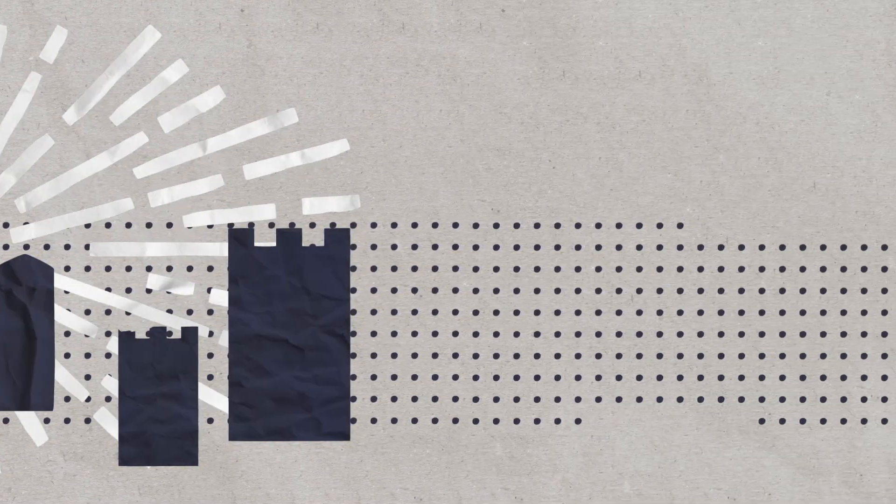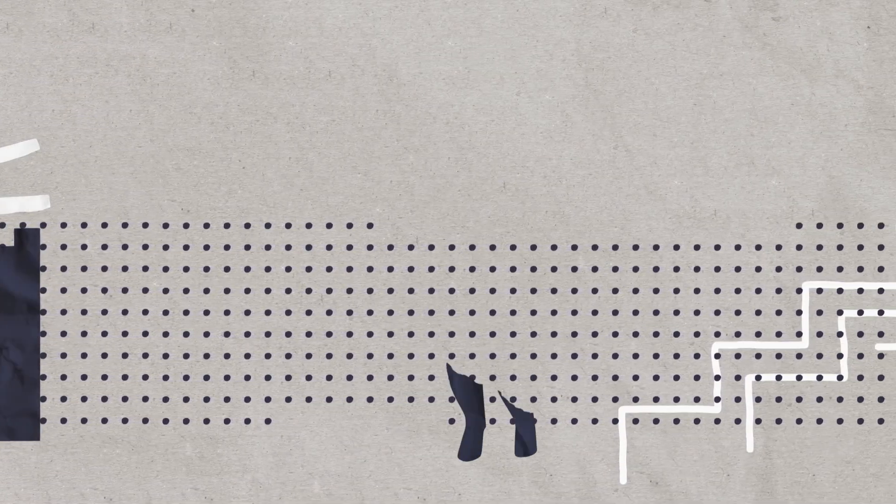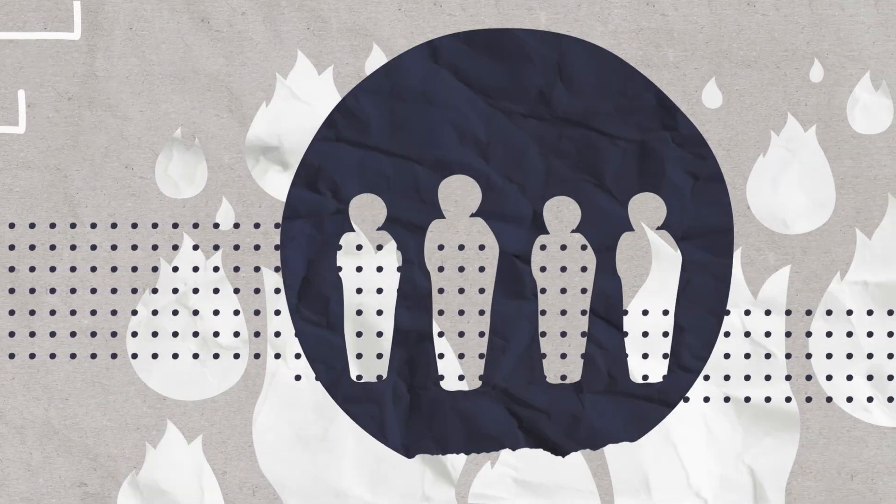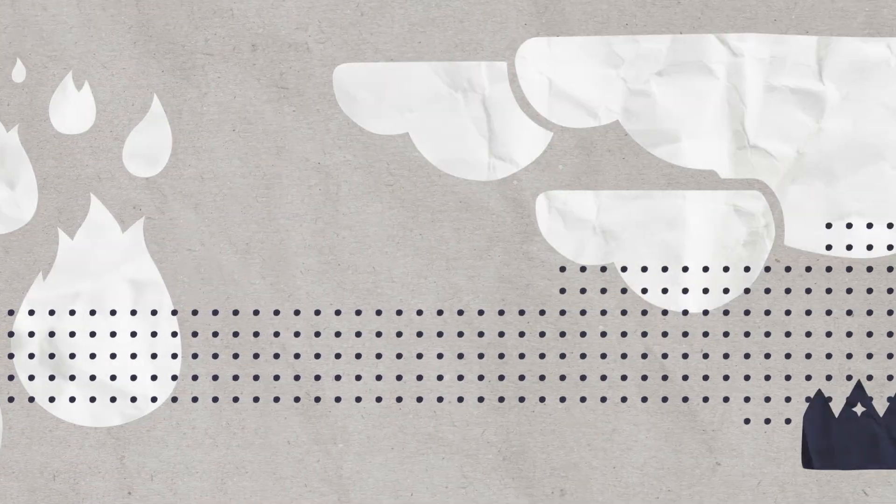Following is a short story of Daniel's friends as they face orders to worship a false god. They refuse and are thrown into a furnace, but God miraculously protects them from the flames, displaying his power before the king.